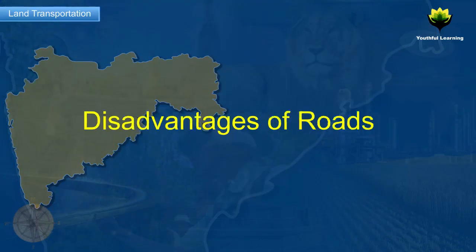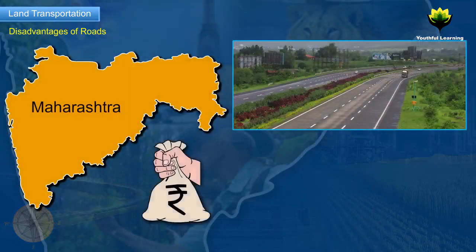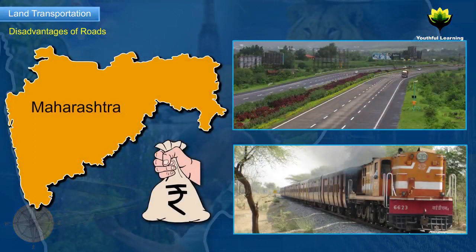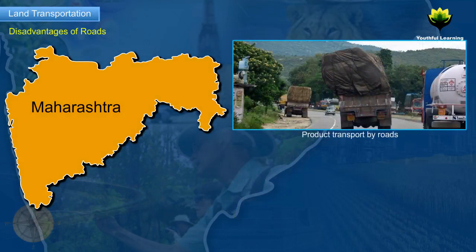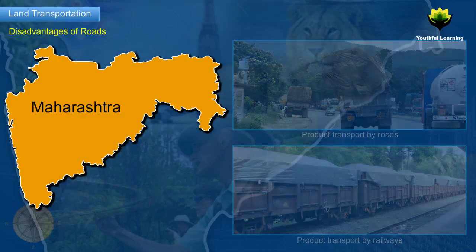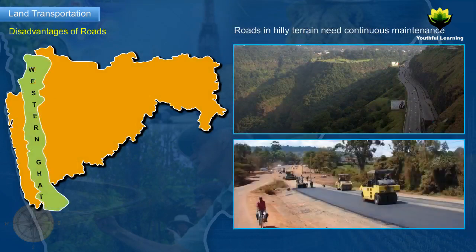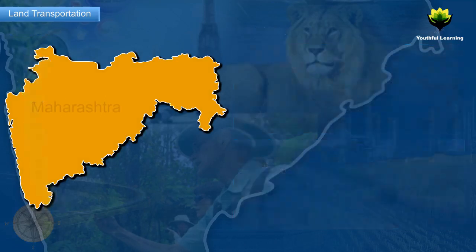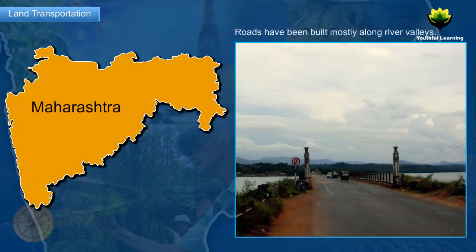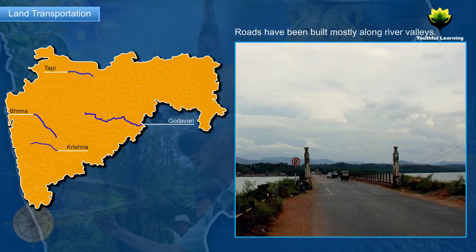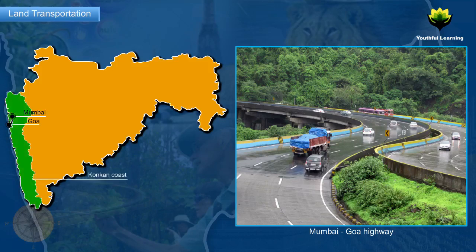Disadvantages of Roads. Roads on the whole are expensive as compared to railways when talking about long distances. Moving heavy and bulk products by roads is more difficult than moving them by railways. Building roads in hilly terrain such as the Western Ghats is not feasible as roads in such terrain need continuous maintenance, especially during the rainy season. In the state, roads have been built mostly along river valleys of Taapi, Bhima, Krishna and Godavari. The Mumbai-Goa highway built along the Konkan coast has contributed to the growth of the Konkan area.